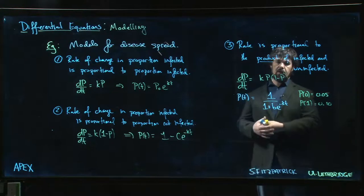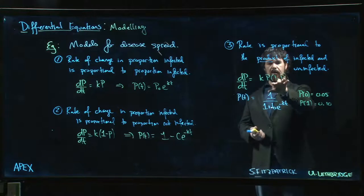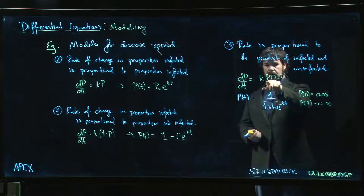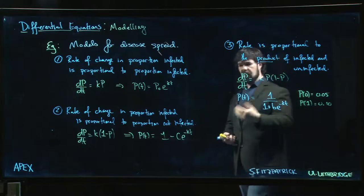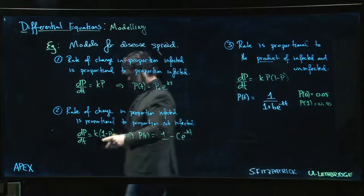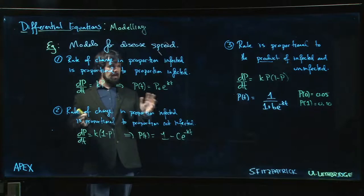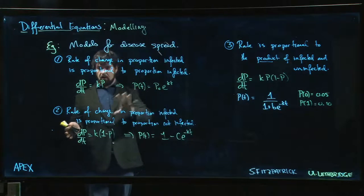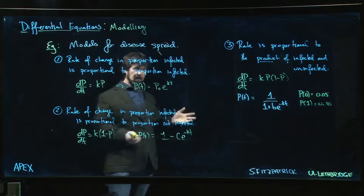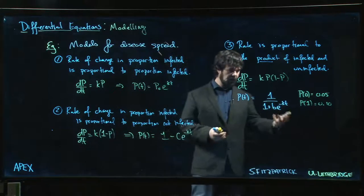If you reach a point where a large fraction of the population is infected, then this is now getting closer to 0, but this is getting closer to 1, so you actually have something that captures both of these models in different places, for different values of p.